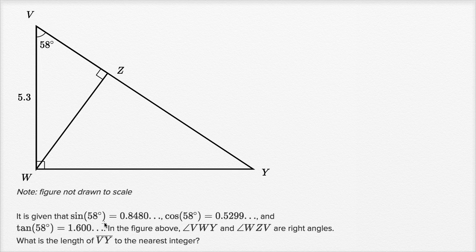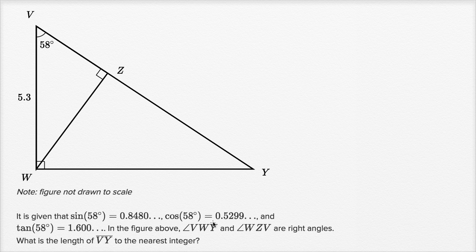It is given that sine of 58 degrees is equal to 0.8480, cosine of 58 degrees is 0.5299, and actually they're just giving us the first few digits of these—they keep going on and on. And tangent of 58 degrees is 1.600.